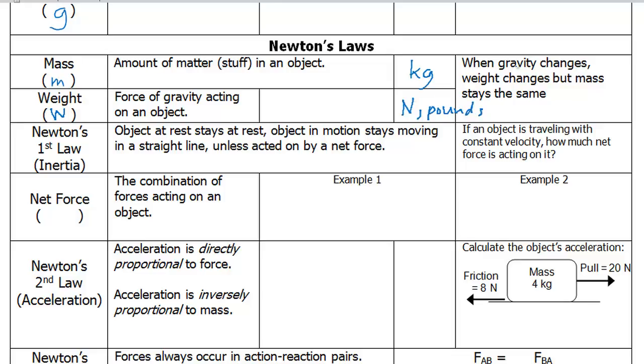One important point: when gravity changes, weight changes, but mass stays the same. There is an equation here, weight equals mass times gravitational acceleration. So if gravitational acceleration changes, you'll still have the same mass, but your weight will change.